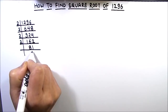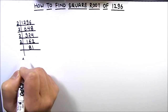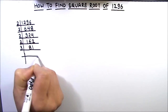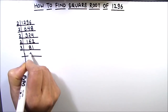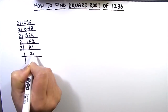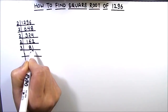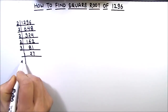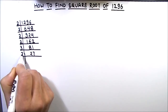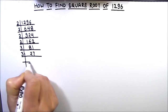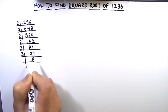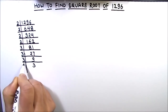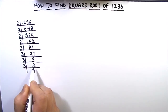Now this is an odd number, so let's try the next prime number which is 3 to divide this number. 3 times 2 is 6, 2 will be carried over, so this becomes 21. 3 times 7 is 21. Again we are going to use 3. 3 times 9 is 27, 3 times 3 is 9, and 3 times 1 is 3.